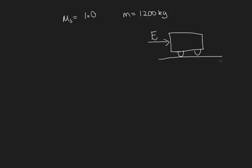Let's start this problem by drawing a diagram. So here's the surface. Here's the car. We're told that the mass of the car is equal to 1,200 kilograms and the coefficient of static friction is equal to 1.0. We'll apply a force in this direction and the car will experience a frictional force opposing this applied force here.